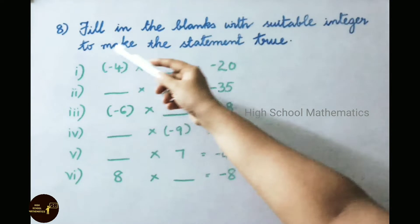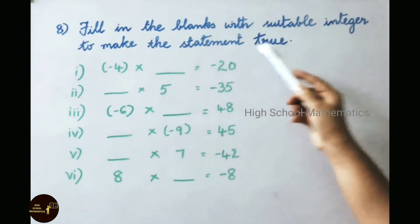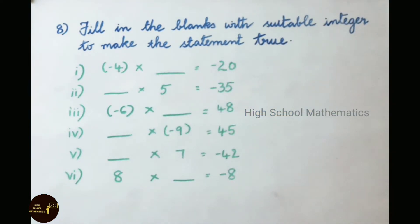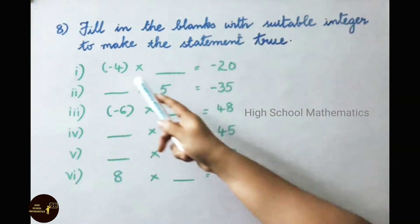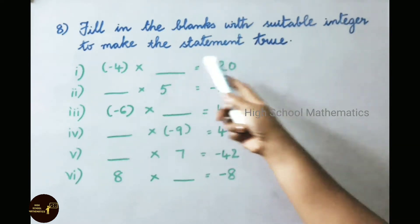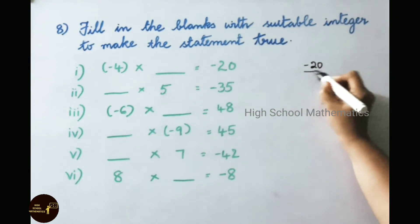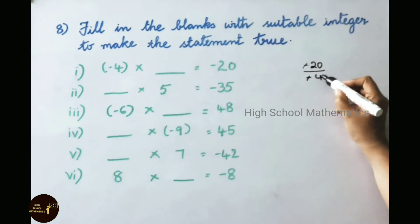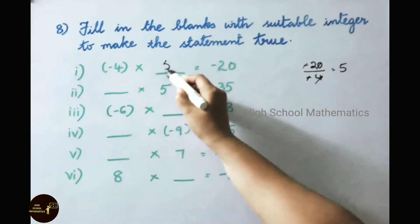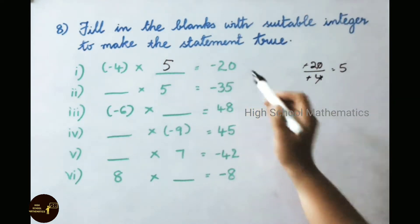See now question number 8: fill in the blanks with a suitable integer to make the statement true. First one: minus 4 into blank equals minus 20. Whenever one integer and the answer are given, we divide them. Minus 20 divided by minus 4 — minus signs cancel — 4 times table: 20 is 5 times. So the missing integer is 5. Therefore, minus 4 into 5 equals minus 20.